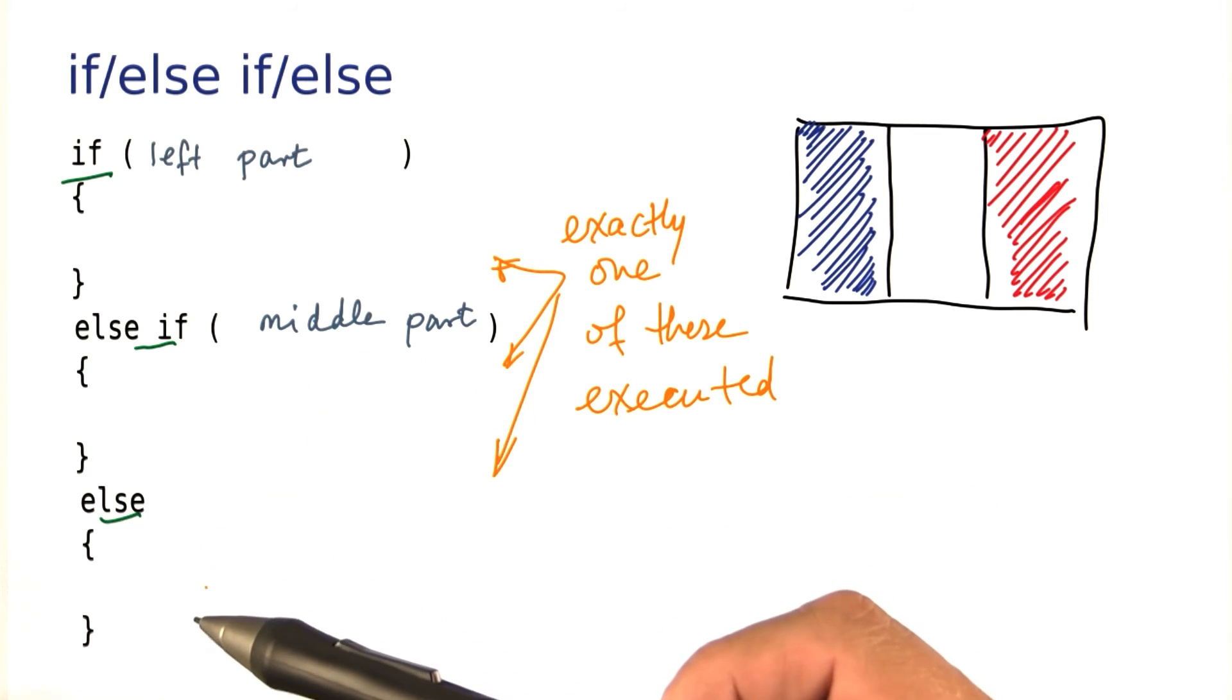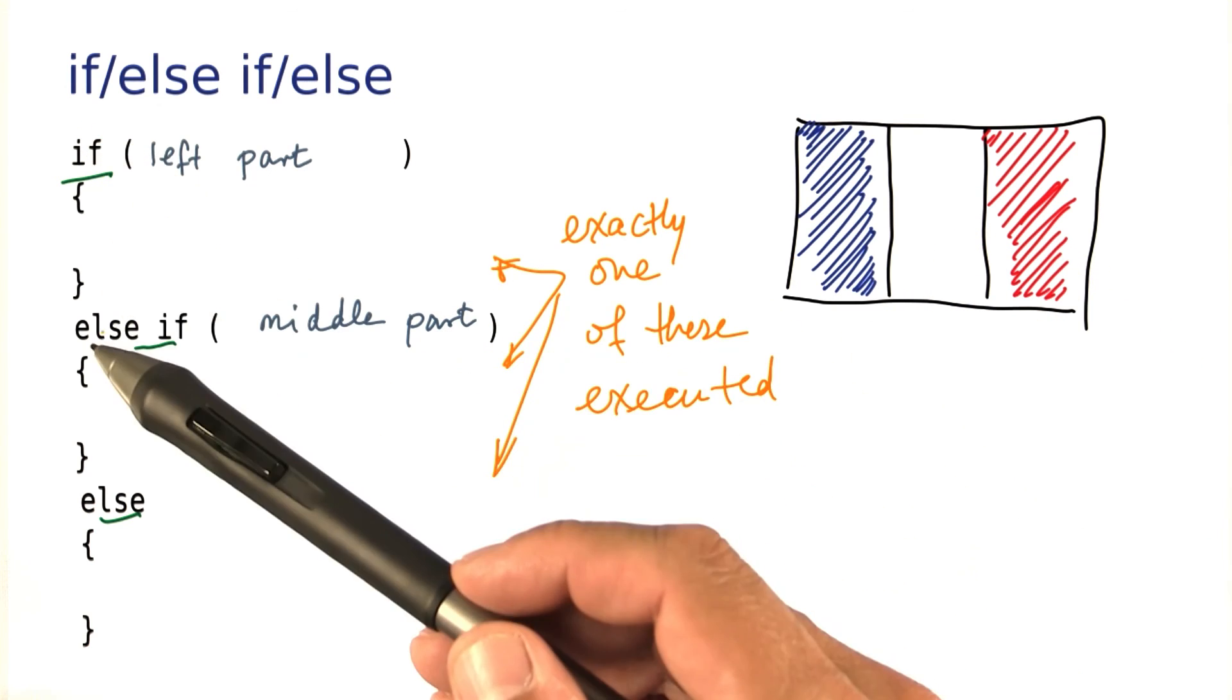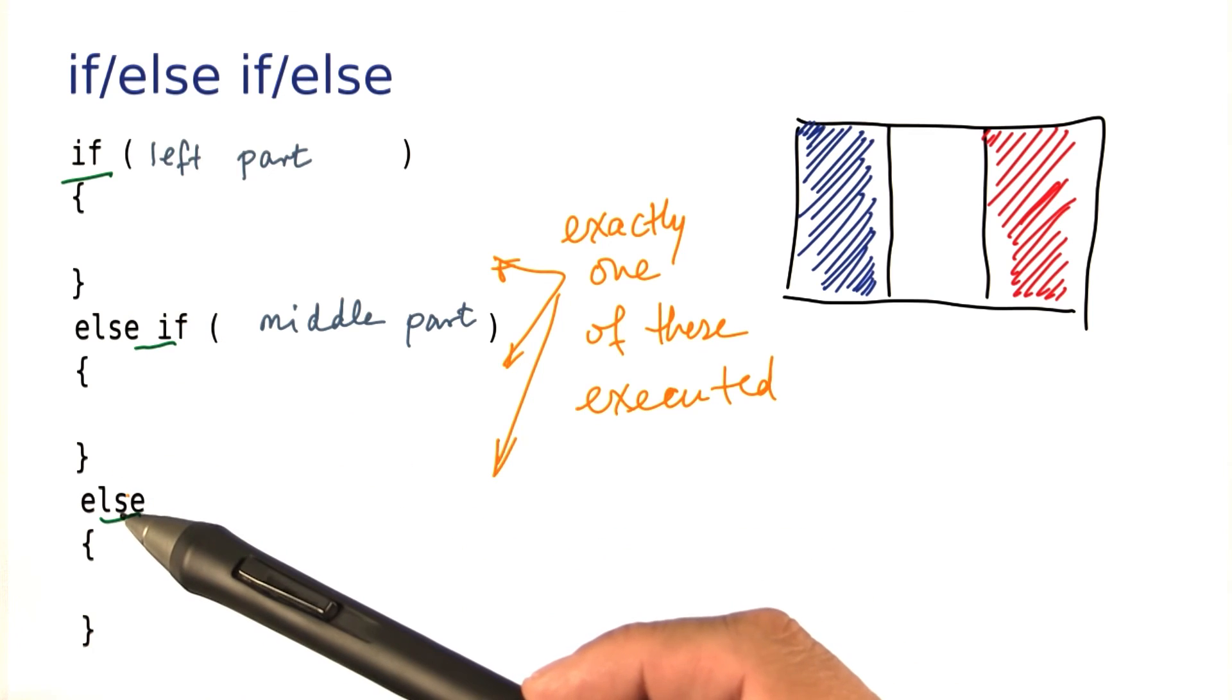Well, now it's your turn to try that with the French flag. Again, you'll be given a point xy that could fall anywhere within the flag, and you need to make a decision whether to return blue, white, or red. And when you do that, be sure to use an if else if, else construction.